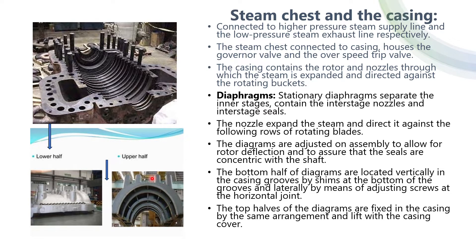The steam chest connected to the casing houses the governor valve and the over-speed trip valves. The casing contains the rotor and the nozzles through which the steam is expanded and directed against the rotating buckets.